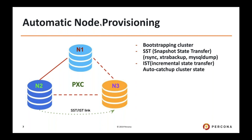Another advantage of PXC is that you can spin up new nodes in a nearly automatic way. If one node goes down or you need to add another node to the cluster, this is transparent. Galera uses processes like SST and IST in the background so nodes can recover without disrupting the application. You can also linearly scale reads — if the three nodes can't keep up, just spin another one and ProxySQL detects it automatically.